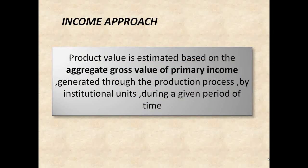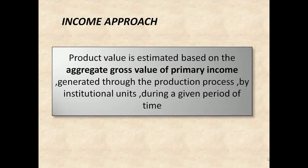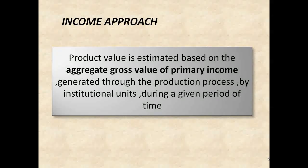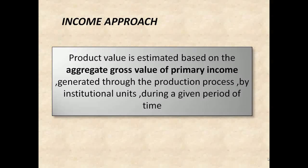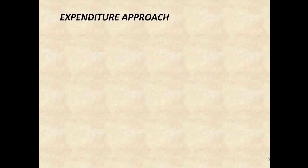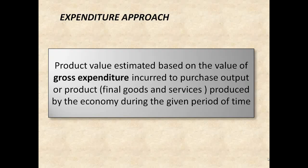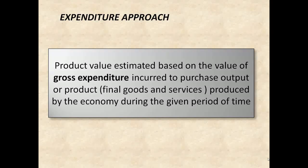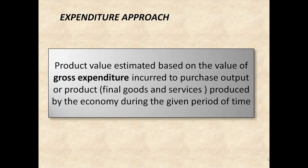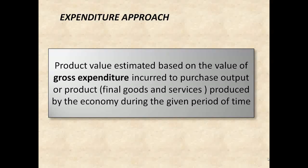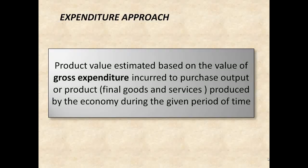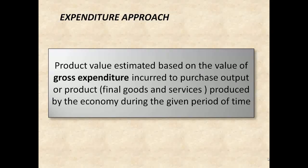Under the income approach, the product value is estimated based on the aggregate gross value of primary income generated through the production process by institutional units during a given period of time. Under the expenditure approach, the product value is estimated based on the value of gross expenditure incurred to purchase output or product produced by the economy during the given period of time.